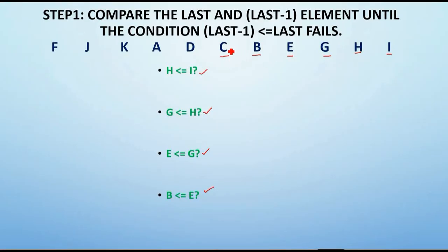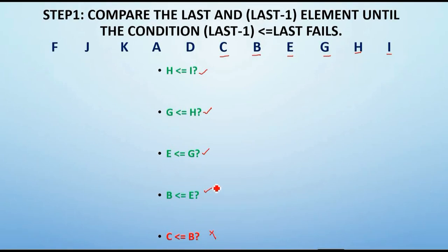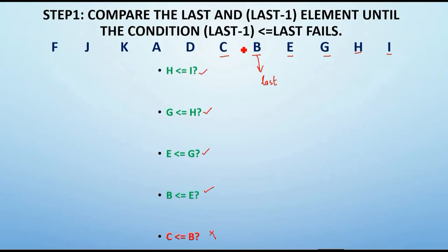I check whether C ≤ B. The condition fails since C is greater than B. So since the condition fails, we stop this step. When this condition failed, the last element was B and the last-1 element was C. With this in mind, moving on to the next step.